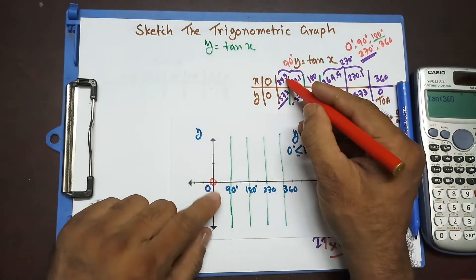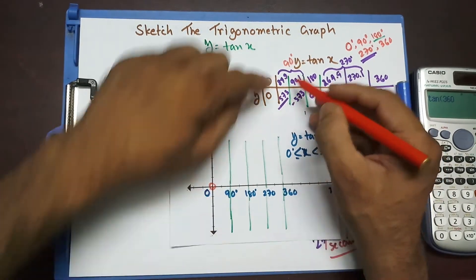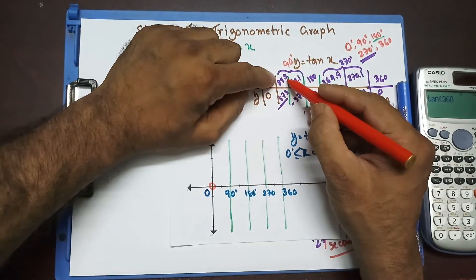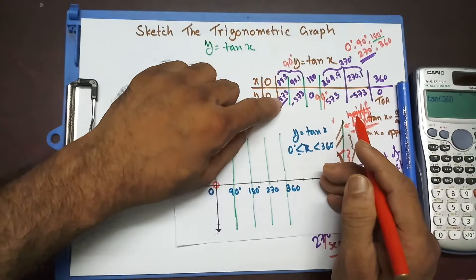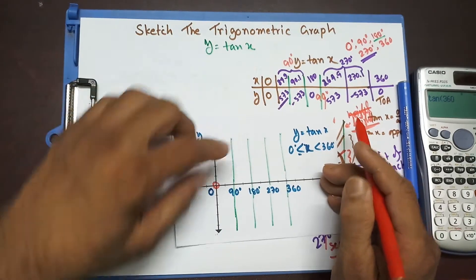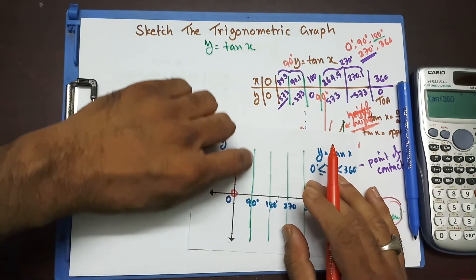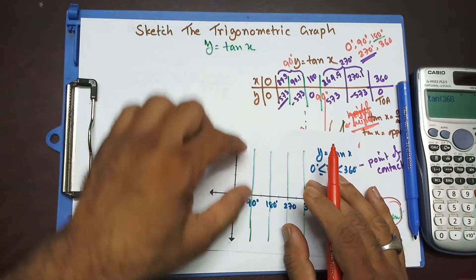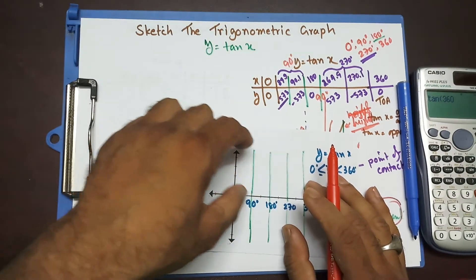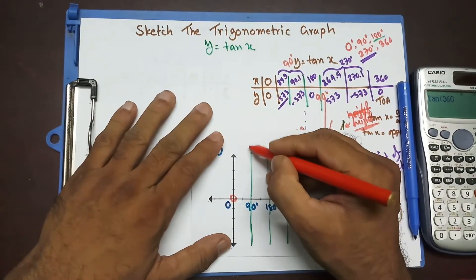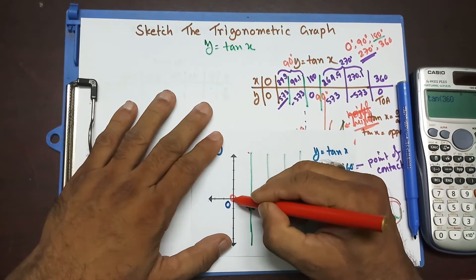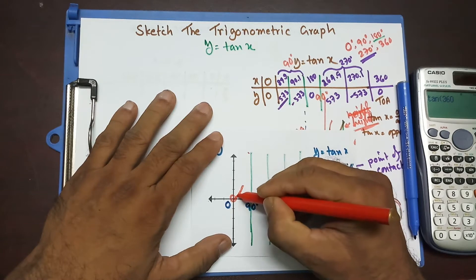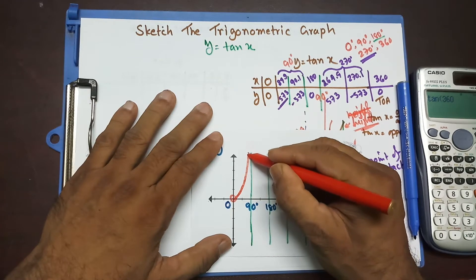And at 89.9, it's 573. If you take, instead of 89.9, if you take 89.9999, it's going to be a very bigger number than this one. That should mean that it's going to go really up somewhere, but it will not get onto this line. So, I'm taking that value over here somewhere really close to this line. And I'm going to join this. It's going to be gradually going up, up, up like that. So, this part is here.